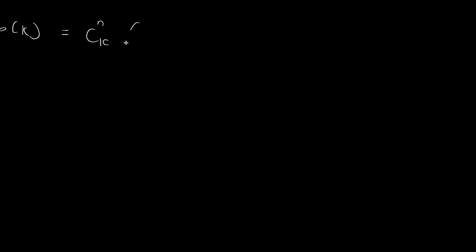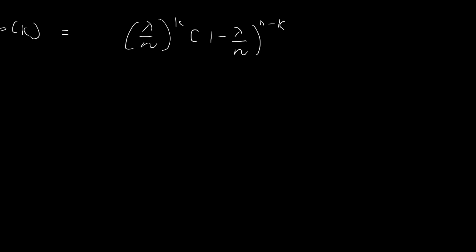For p, let's write this as lambda divided by n to the power of k, and then 1 minus lambda divided by n to the power of n minus k. For nCk, we can rewrite this as n factorial divided by k factorial divided by n minus k factorial. Let's pull out the terms lambda to the power of k and k factorial, since these terms are unaffected by n.